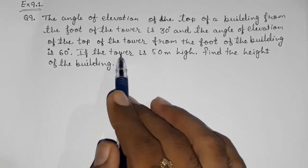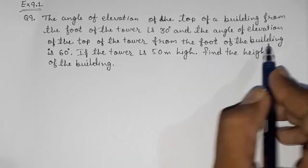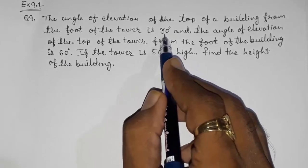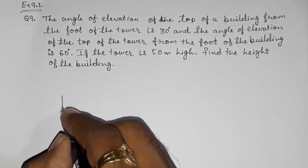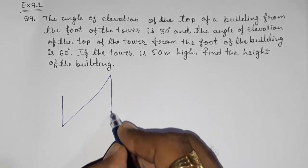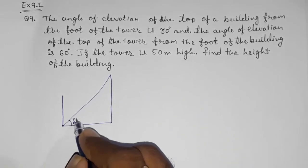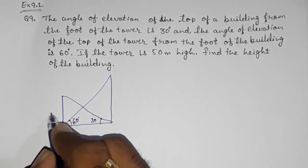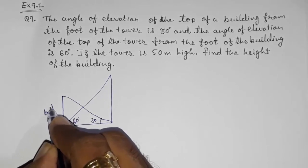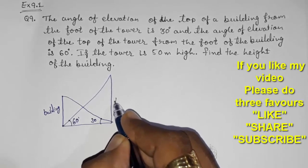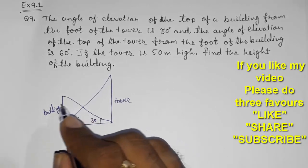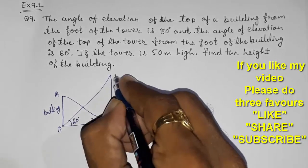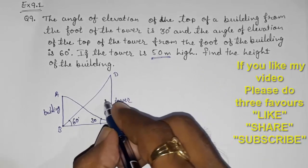We have one building and one tower, but we don't know which one is bigger. From the foot of the building the angle of elevation is 60 degrees, and the other angle is 30 degrees. Opposite to the greater angle the side is greater, and opposite to the smaller angle the side is smaller. So this will be our building, because from the building's base it is making 60 degrees with the tower, and from the tower's base it is making 30 degrees of angle of elevation to the building.